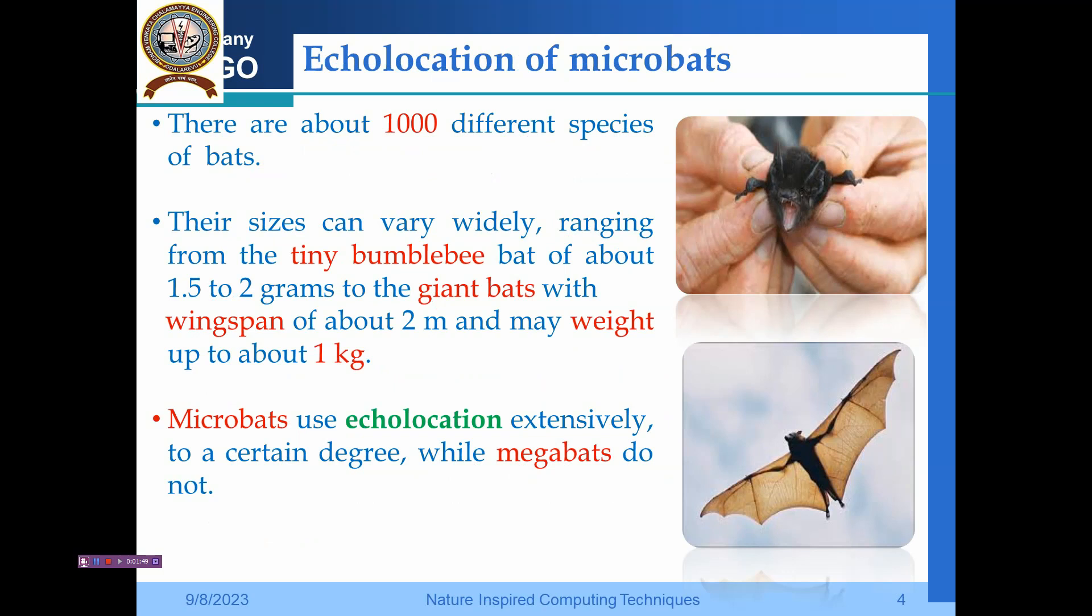You will be astonished to know that there are about 1000 different species of bats. Some of the bats have a wide range from 2 grams, like the tiny bumblebee, to the giant bats up to 1-2 kg with a wingspan of about 2 meters.